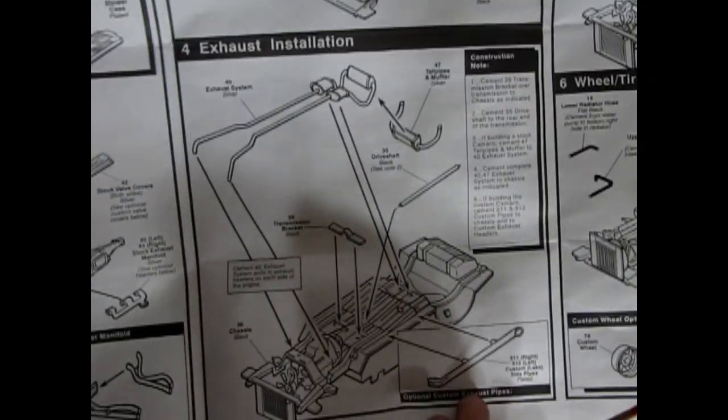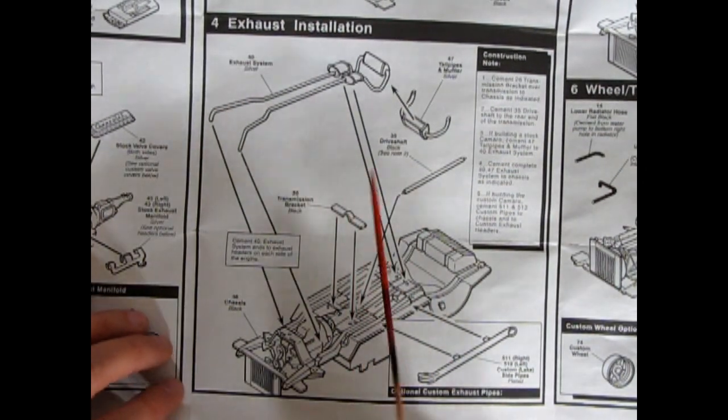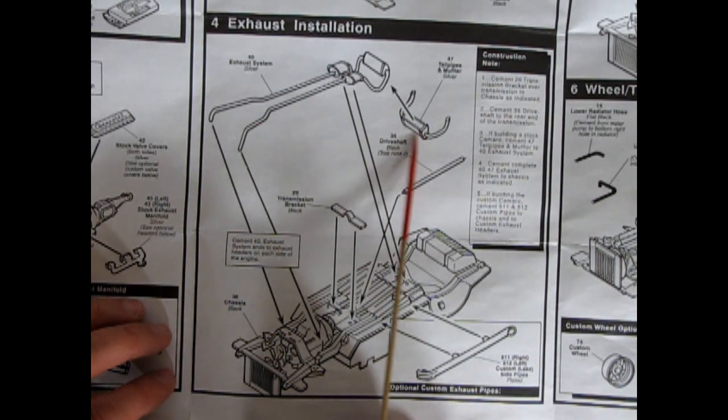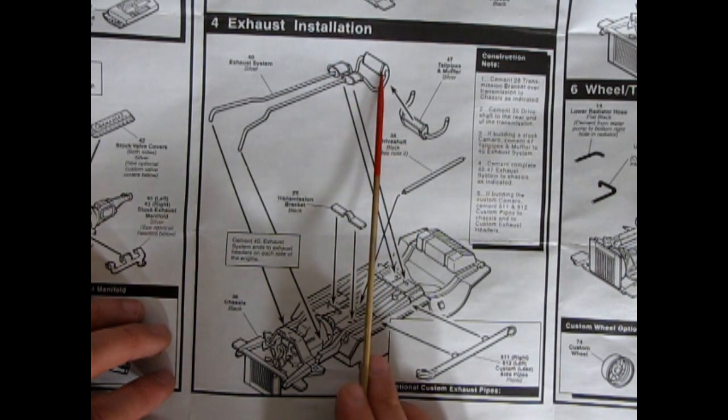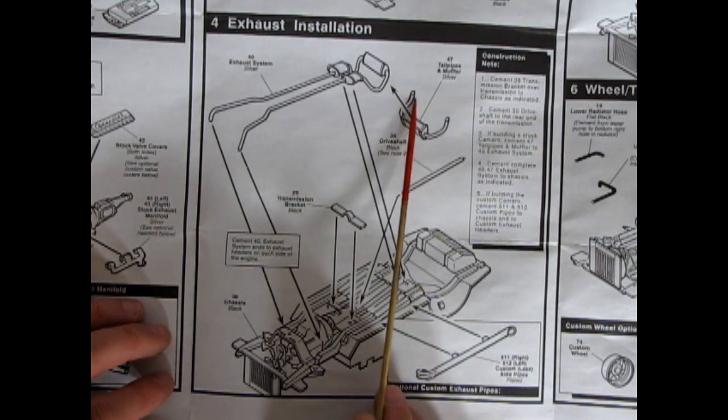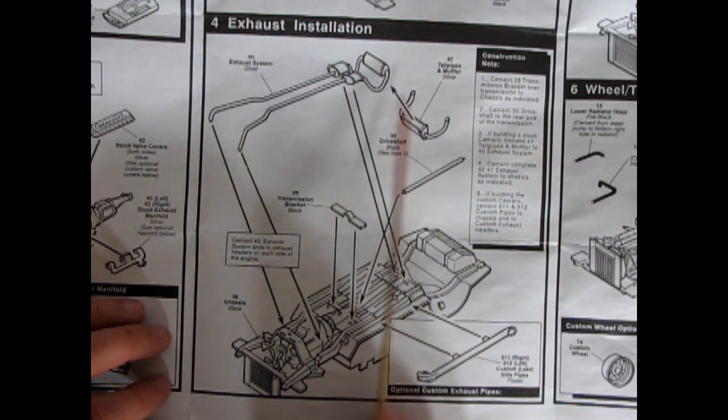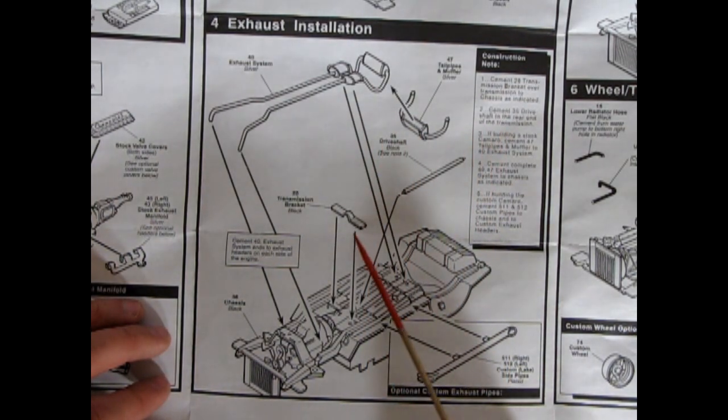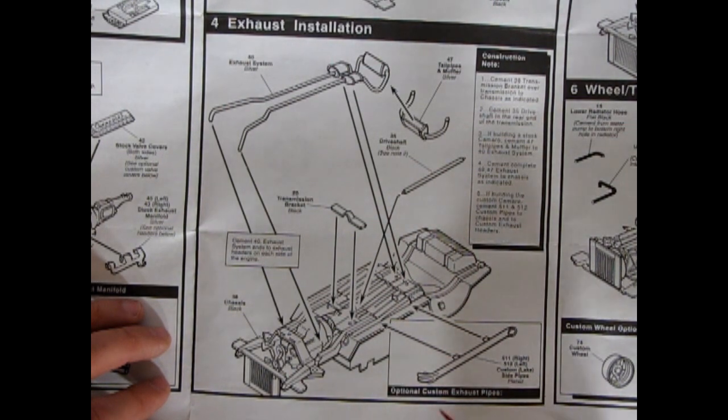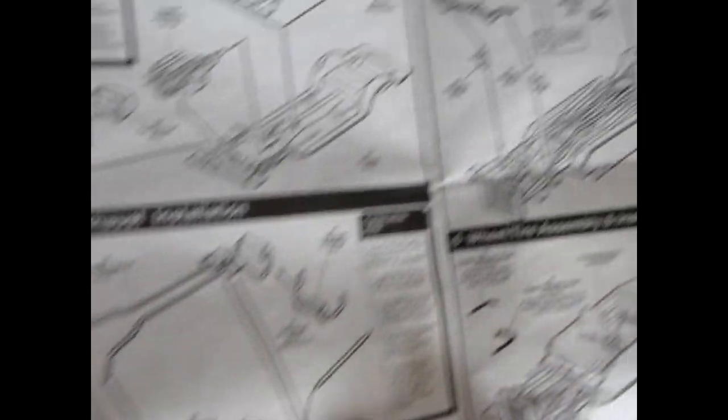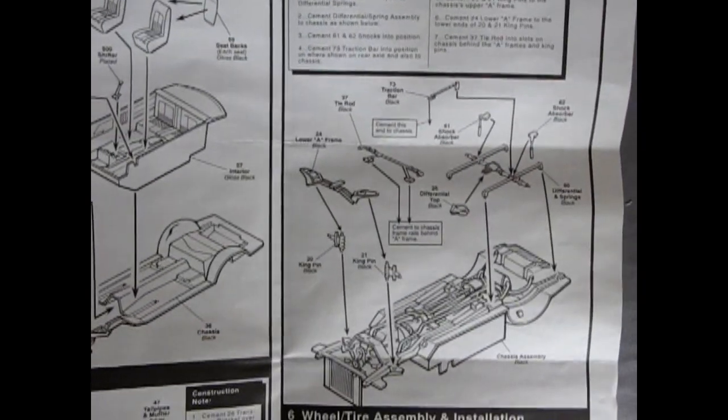Then coming down here, we have the undercarriage going together. There's our exhaust pipes. And then they have the two mufflers going into the single muffler, which then goes into two exhaust pipes. Which is kind of bizarre. But at any rate, the mufflers glued together there. The transmission bracket going in here, our drive shaft connecting your engine together. And then you've got your optional lake pipes sitting on there.